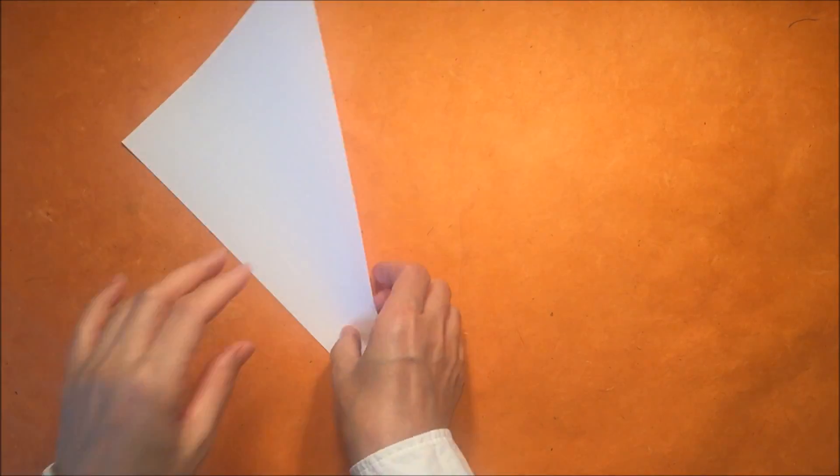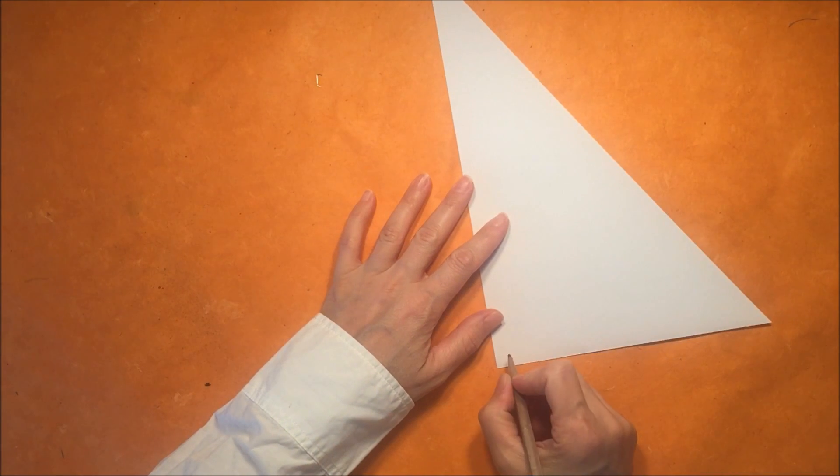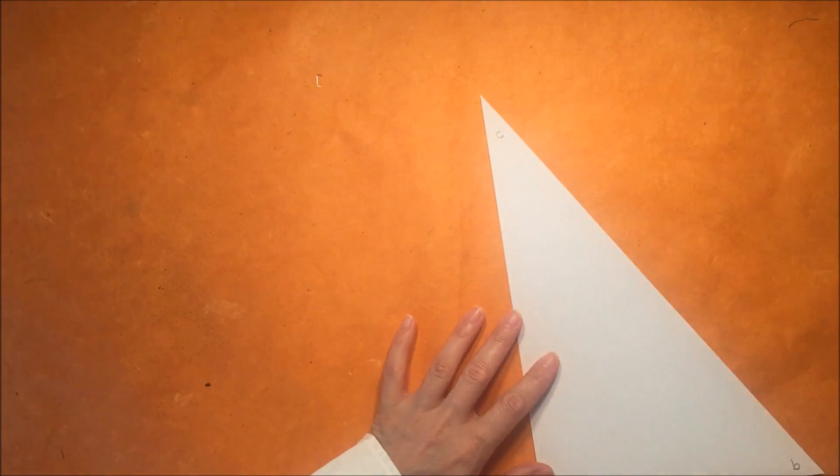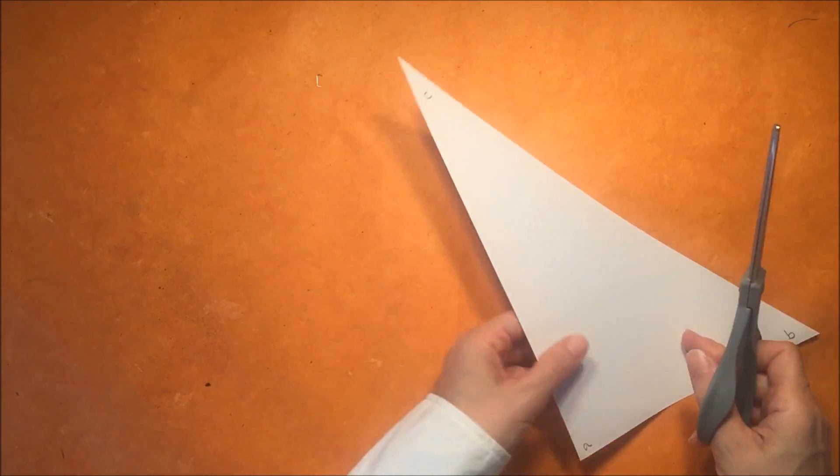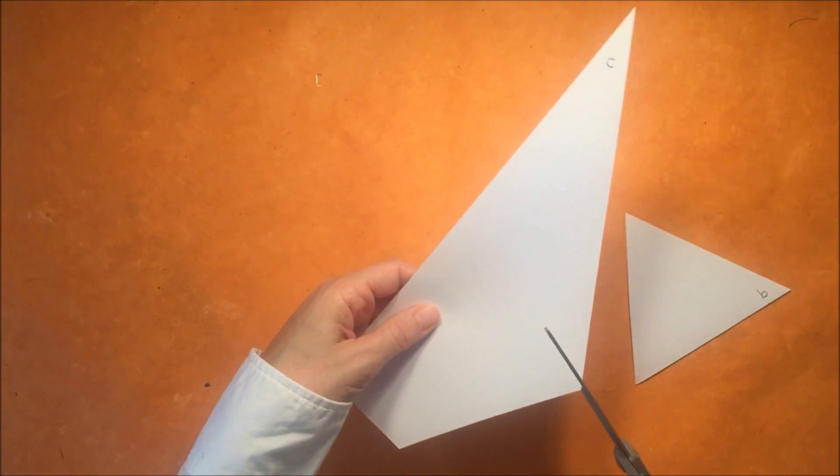I'm going to put this aside and mark the interior angles of this triangle because once we cut this triangle up we won't be able to recognize which ones were the interior angles. I'm just going to mark it A, B, and C and then I'm going to cut these angles out.